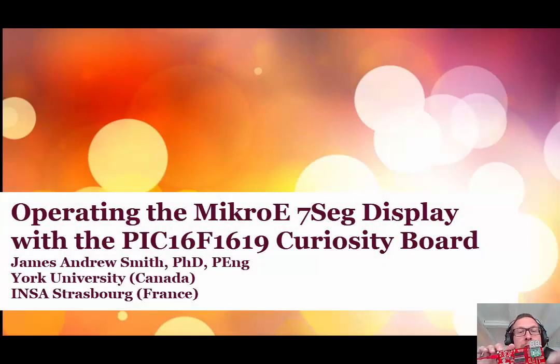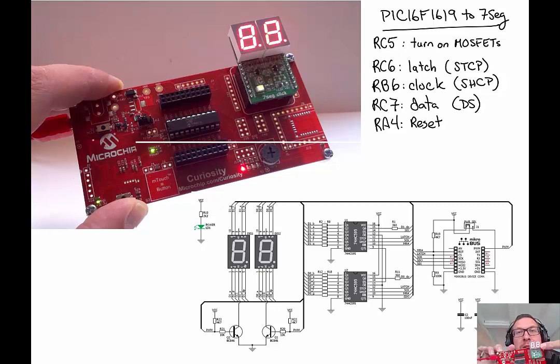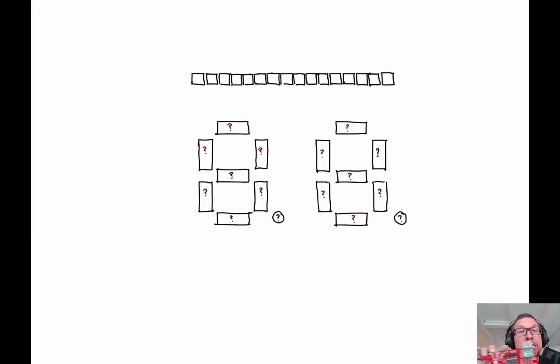Today we're going to show you how to interface the PIC16 on this curiosity board with the seven segment display using the RC5, RC6, RB6, RC7, and RA lines.